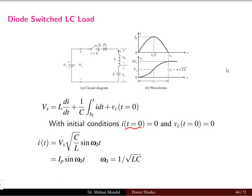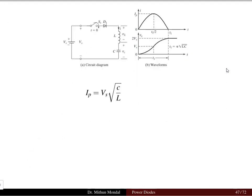If we set the initial condition that at t equal to zero the capacitor is initially uncharged, then the current equation we get is Vs times sqrt(C/L) times sine of omega_0 t, which can be written as Ip sine(omega_0 t). So Ip is the maximum value of the current at frequency omega_0, which is given by 1 / sqrt(LC). The maximum current is Vs times sqrt(C/L), and with known capacitor and inductor values with the DC voltage, we can find the maximum current flowing in the network.